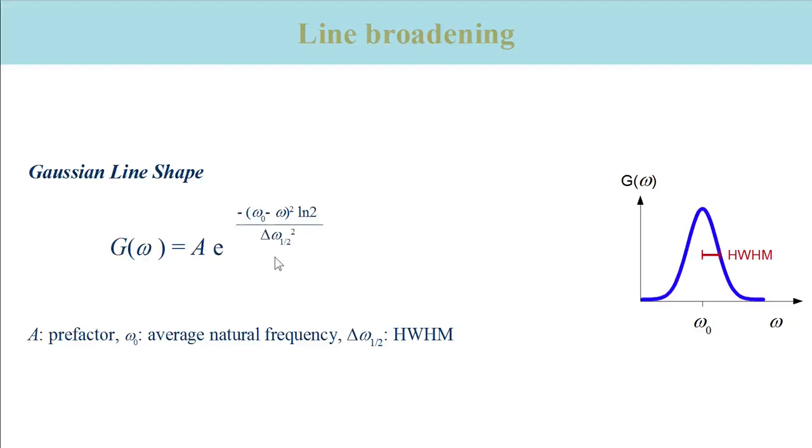In spectroscopy, the squared expression relates the difference between the angular frequency of the radiation, omega, and the average natural frequency, omega zero, with the half width at half height, delta omega one half.